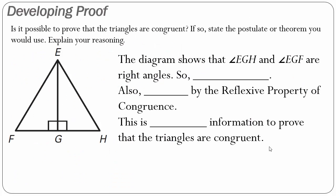Example 1: Developing Proof. Is it possible to prove that the triangles are congruent? If so, state the postulate or theorem you would use and explain your reasoning. When developing proofs, remember you need at least three pieces of information — whether it be three sides, two angles and a side, or two sides and an angle — to prove that the triangles are congruent.